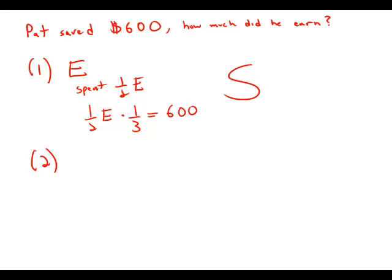Of his earnings last month, Pat paid twice as much in taxes as he saved. So he saved 600, so that means he paid in taxes twice as much, 1200.